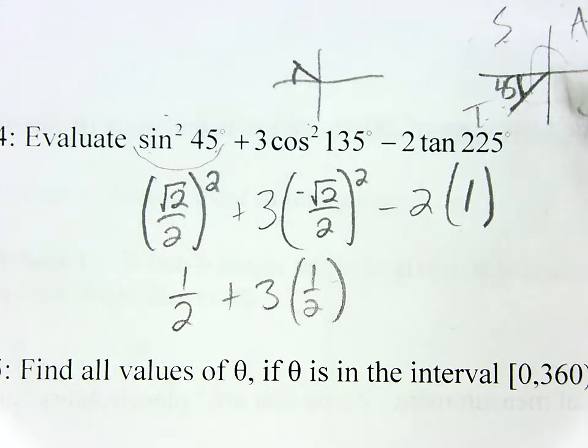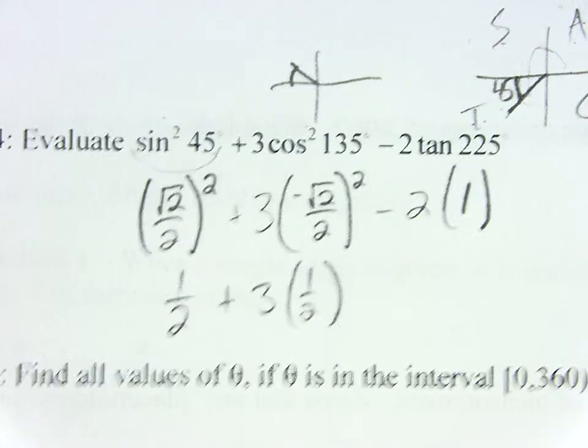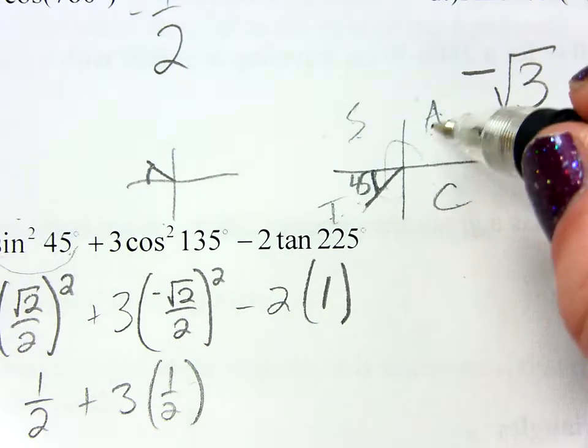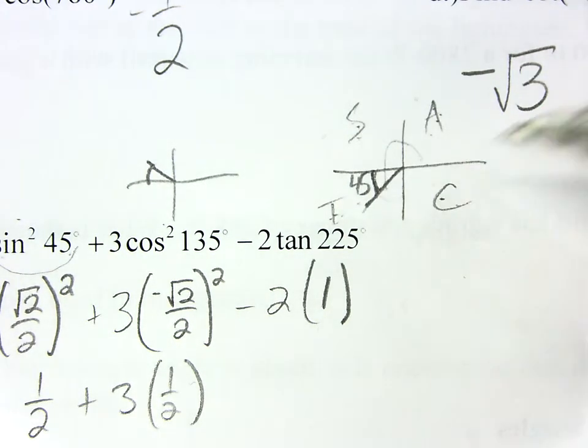Right? These are who's positive. All of them, sine, tangent, cosine. Oh, you can't see what I'm pointing at. All of them, sine, tangent, cosine.